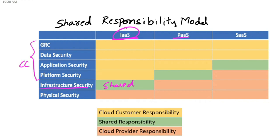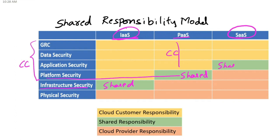In platform as a service, GRC, data security, and application security are all cloud consumer responsibility. Platform security becomes the shared responsibility of both consumer and provider. In software as a service, application security becomes the shared responsibility. Underlying all of this, platform security, infrastructure, and physical security in SaaS are solely the responsibility of the cloud provider.